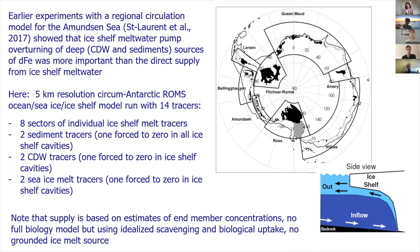Originally, a lot of thought was that ice shelf impact came from dissolved iron in the melt water itself. But others thought it may just be circulation changes driven by the ice shelf melt. There was a big observational program in the Amundsen Sea in front of Dotson ice shelf, and modeling done there by Pierre Saint Laurent. The important part in his modeling was this melt water pump circulation: melting at the base of the ice shelf drives an overturning in the cavity. Pierre found that the ice shelf melt water pump overturning bringing a deep source of dissolved iron was actually more important than a direct supply from ice shelf melt water itself.